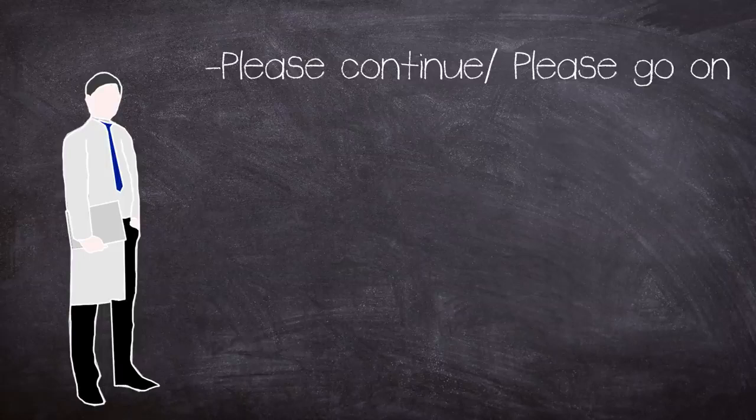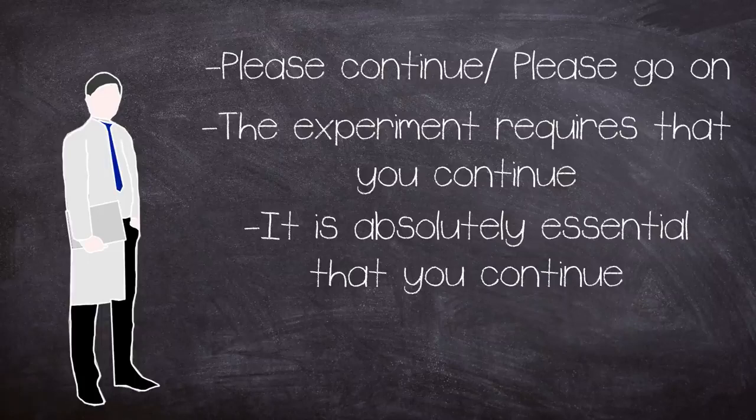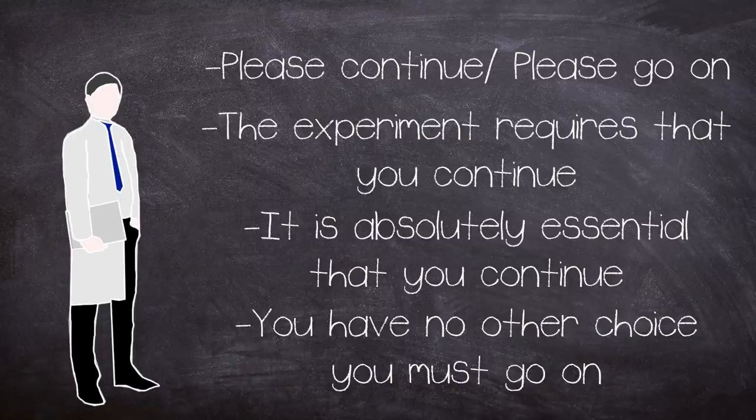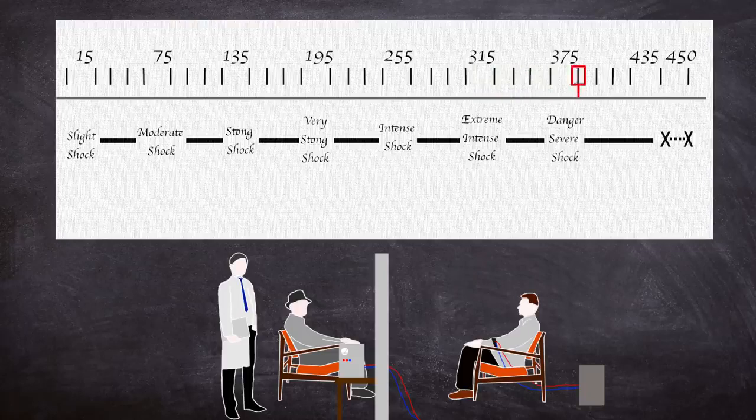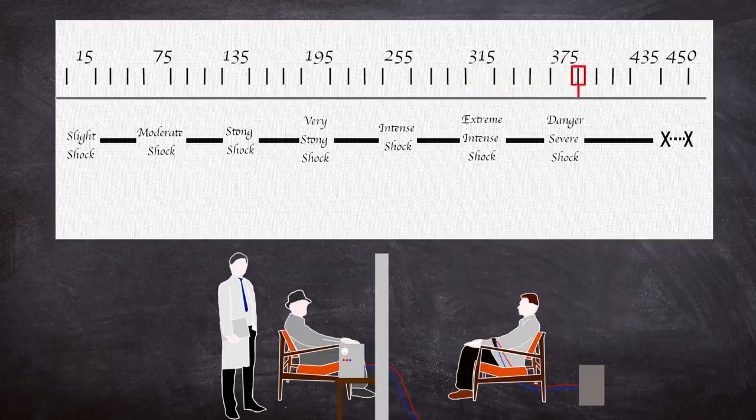Followed by: the experiment requires that you continue. And then: it is absolutely essential that you continue. And finally: you have no other choice, you must go on. The experimenter could only progress to the next prod if the teacher refused. If all four responses were reached, then the experiment would end. If not, it would continue all the way up to 450 volts.